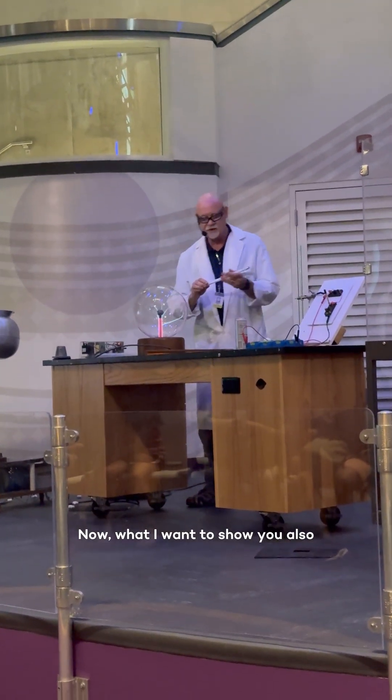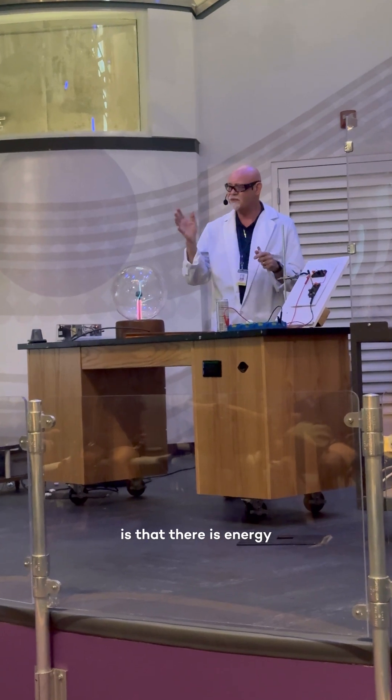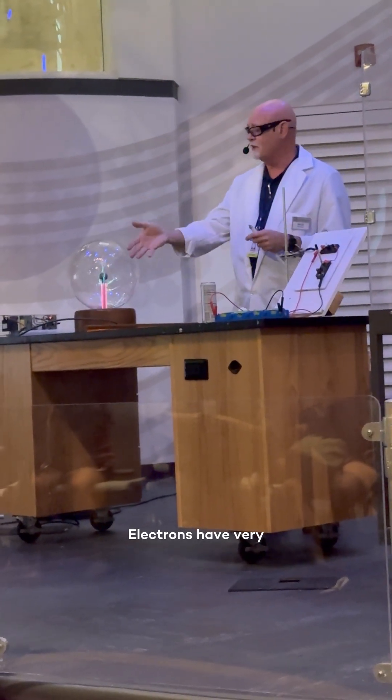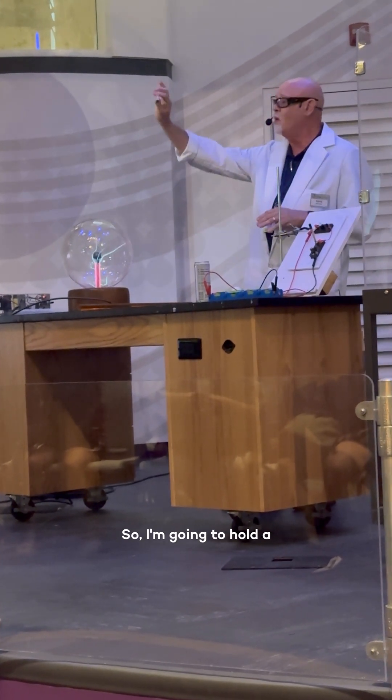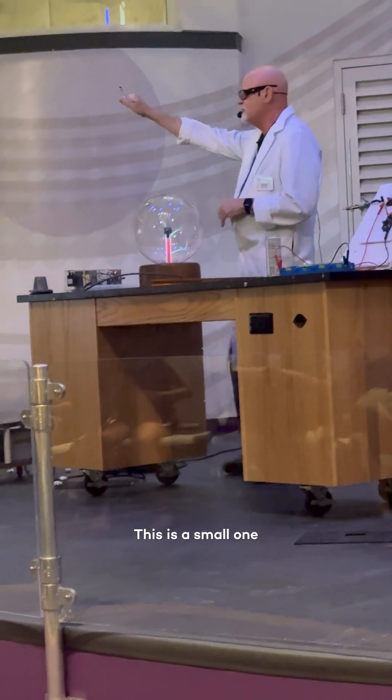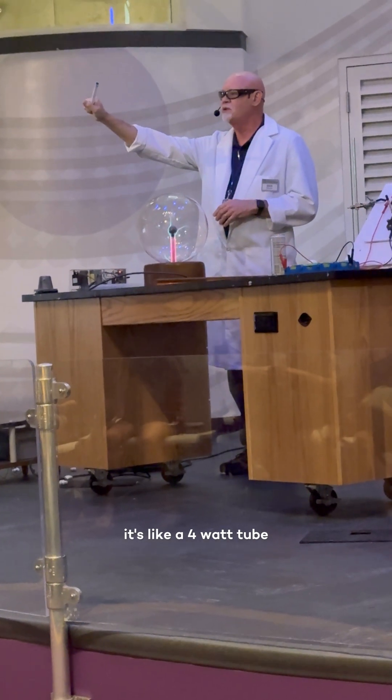Now what I want to show you also is that there is energy, electrons at a very, very low current, going through that in my body. So I'm going to hold a fluorescent tube. This is a small one, it's like a four watt tube.